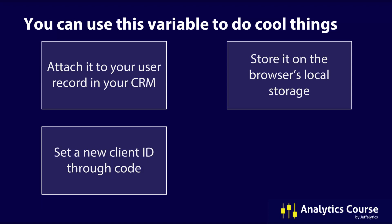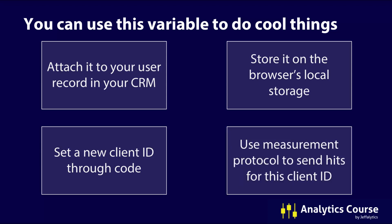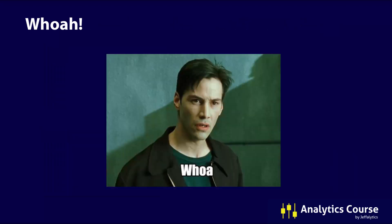You can set a new client ID through code — you can access the client ID and even override it through code using Google Analytics. And you can use the measurement protocol to send hits to this client ID. Now this is a really advanced use case that we talk about in our advanced lessons in Analytics Course. Basically, the measurement protocol is an open way to send any type of hit into Google Analytics. You can take this variable from your browser, send it into Google Analytics, and do some really cool things.